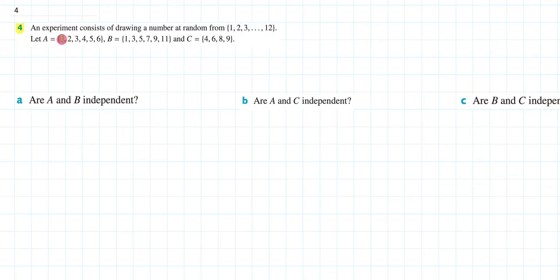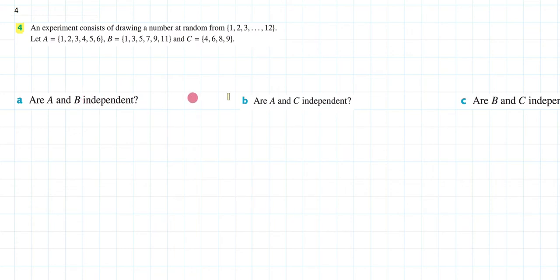Let A equal {1, 2, 3, 4, 5, 6}, B be {1, 3, 5, 7, 9, 11}, and C be {4, 6, 8, 9}. We're then asked to find whether A and B are independent, A and C are independent, and B and C are independent.